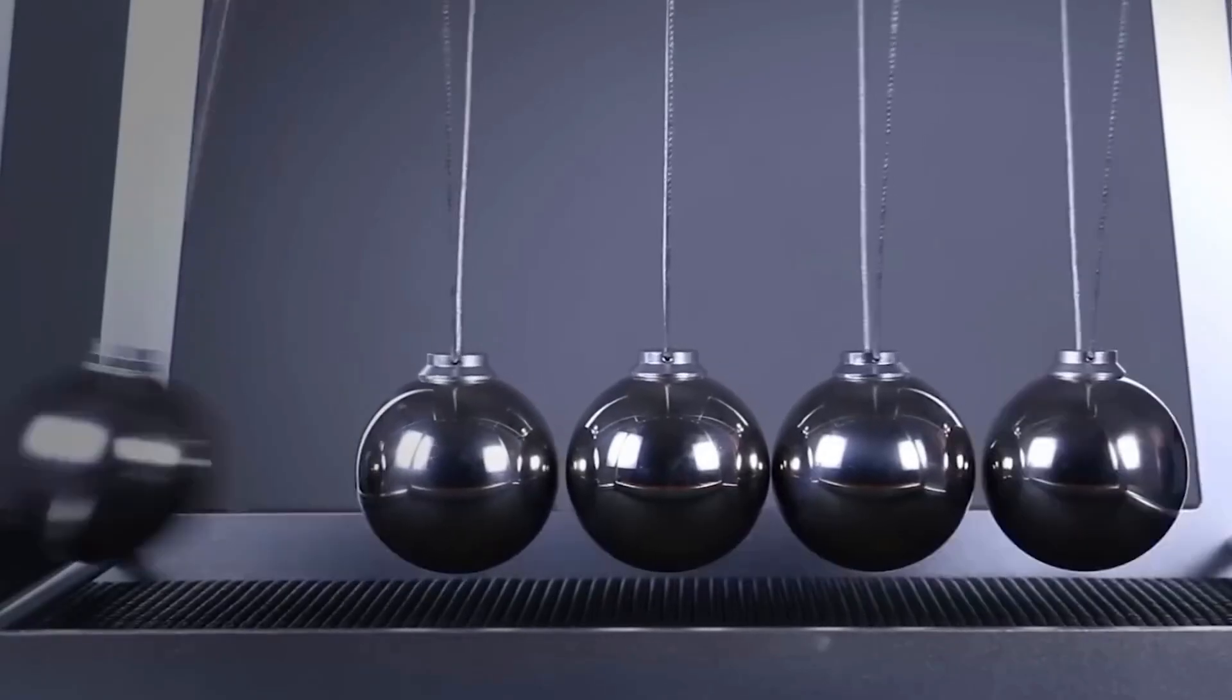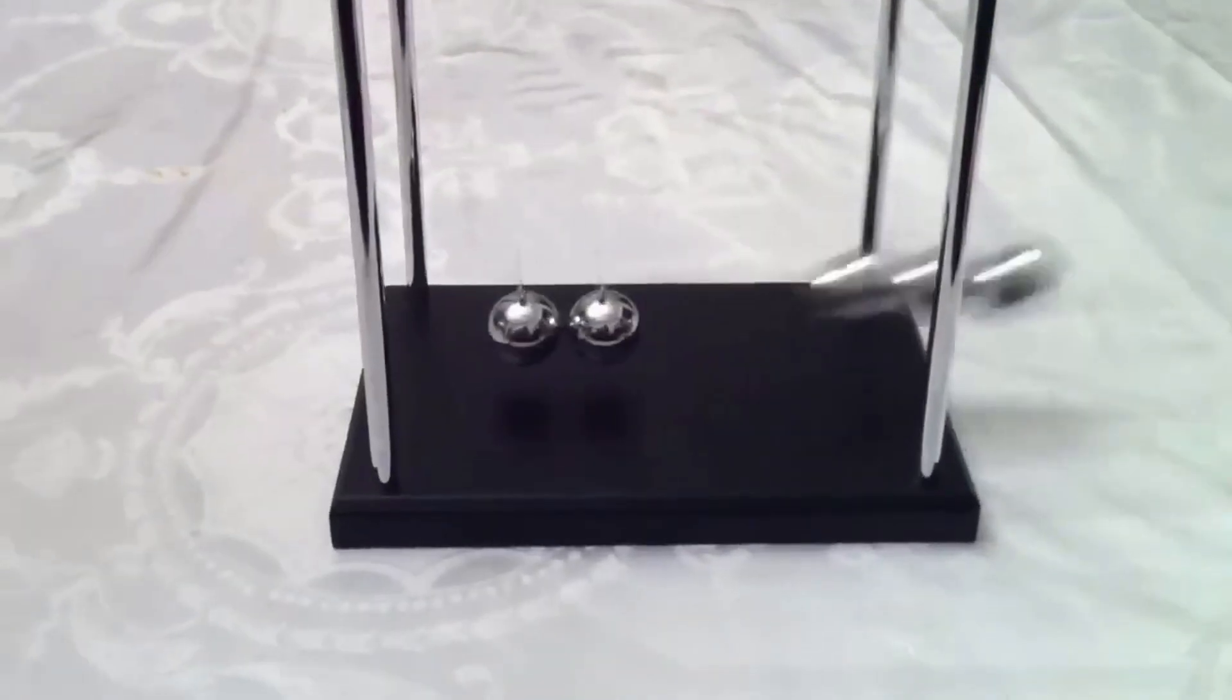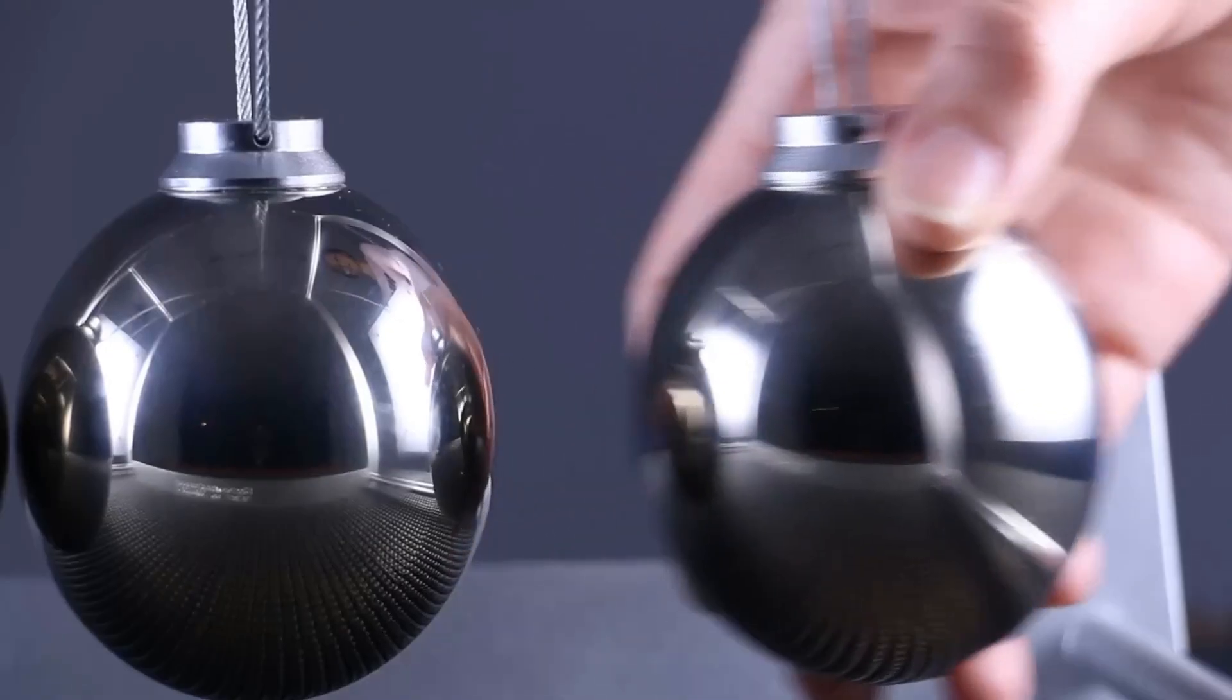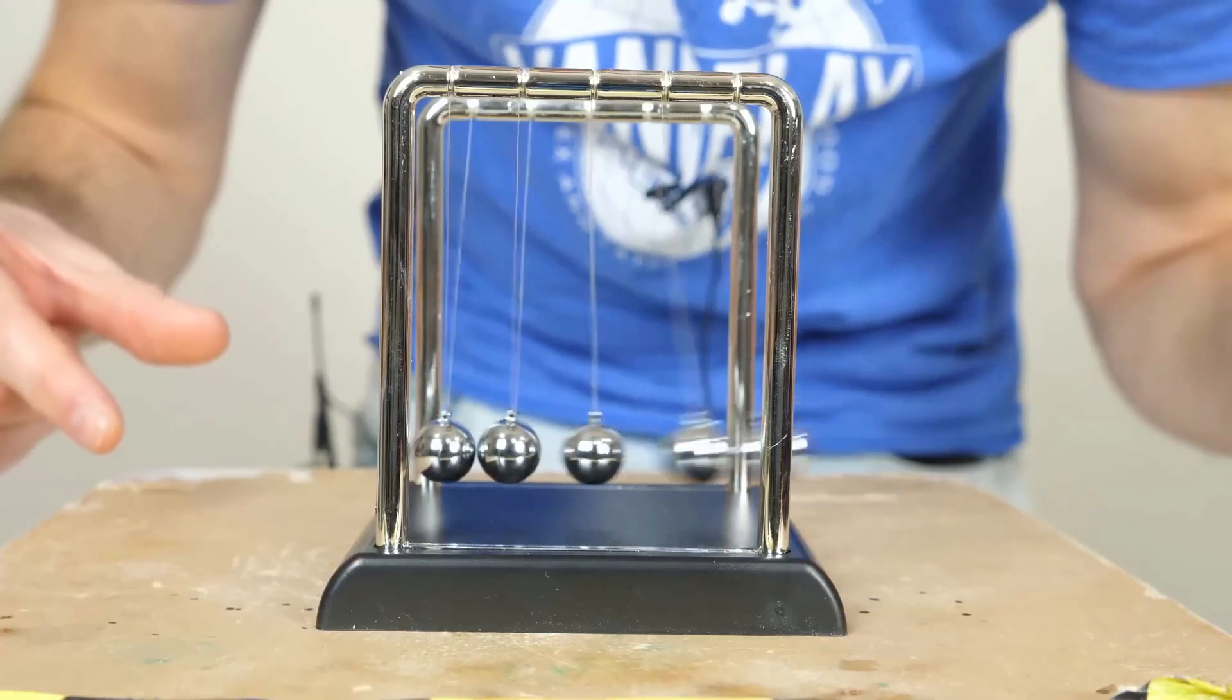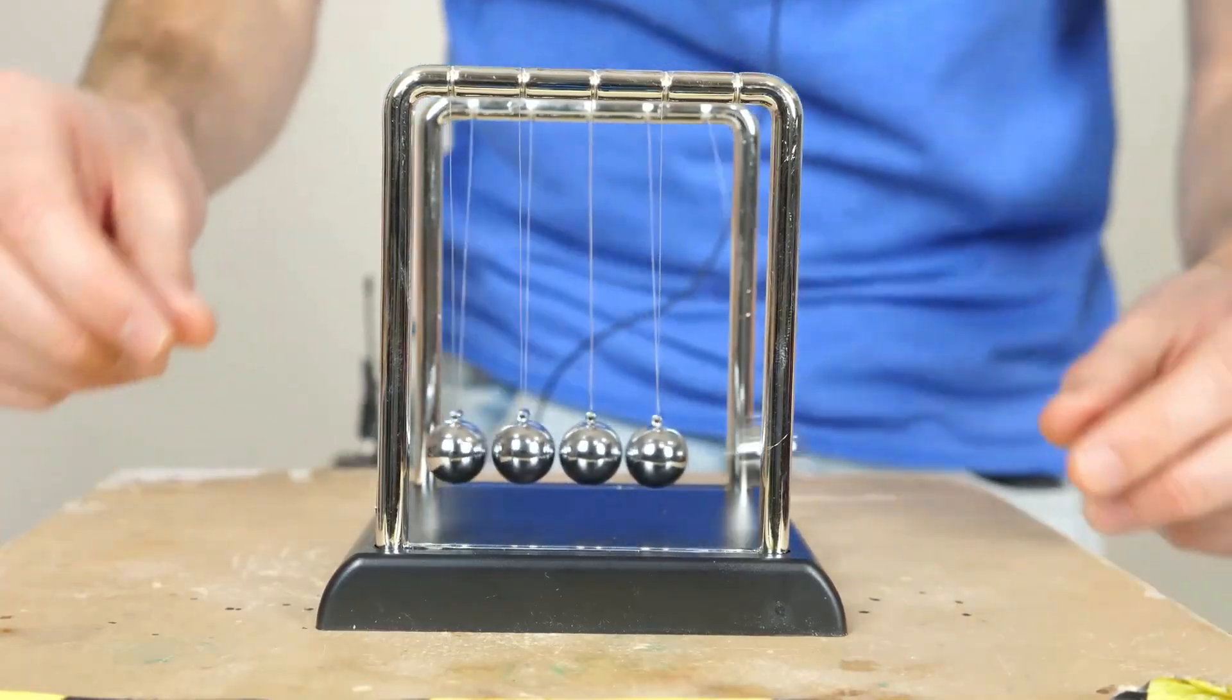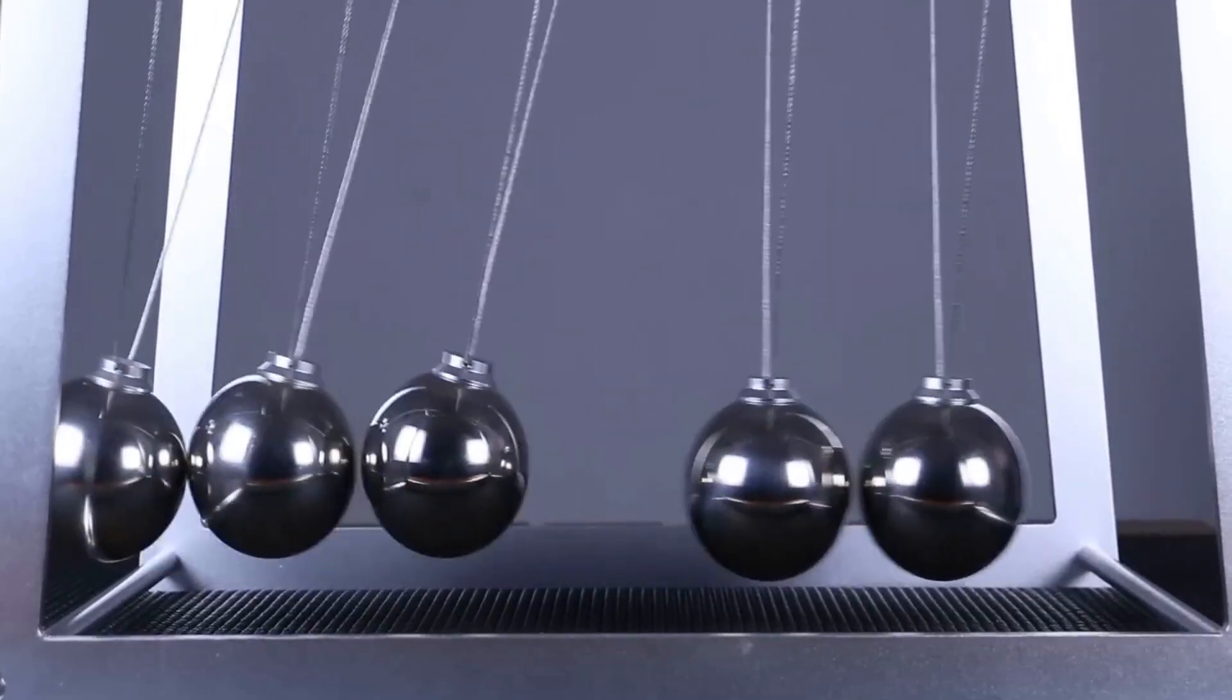When you lift and release one steel ball, it strikes the stationary ones, transferring its momentum through the entire line. The energy travels through the middle balls, which remain almost motionless, until it reaches the final ball, sending it flying. This chain reaction perfectly illustrates how energy isn't lost but passed from one object to another. It's a simple, elegant, and hypnotic display of cause and effect in action.